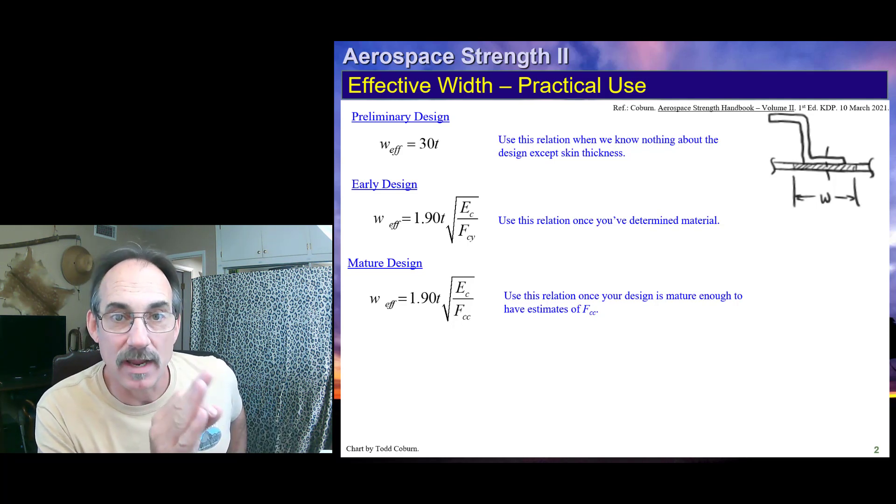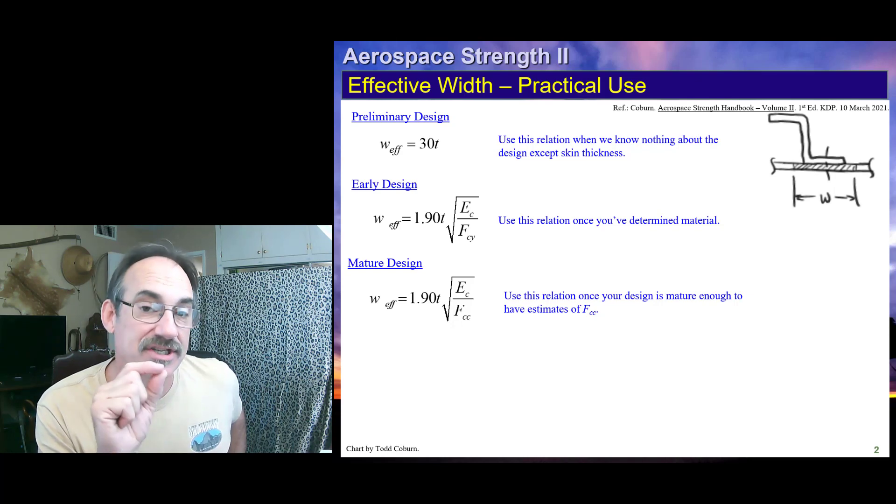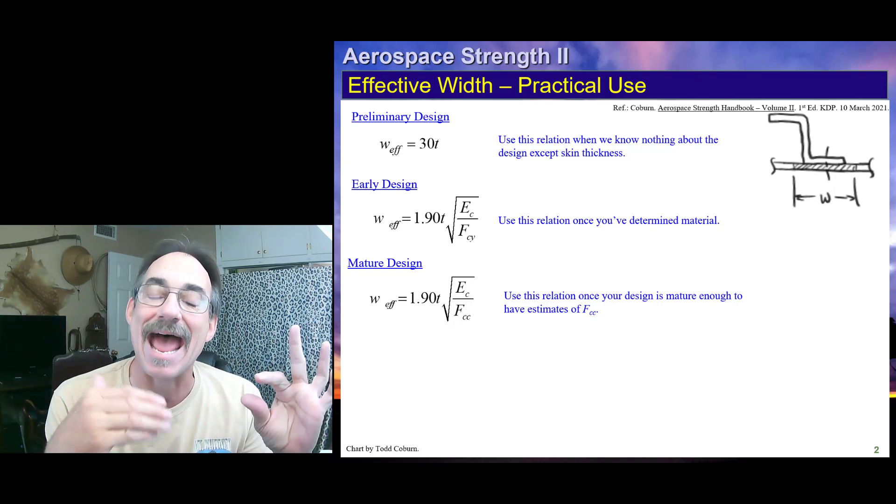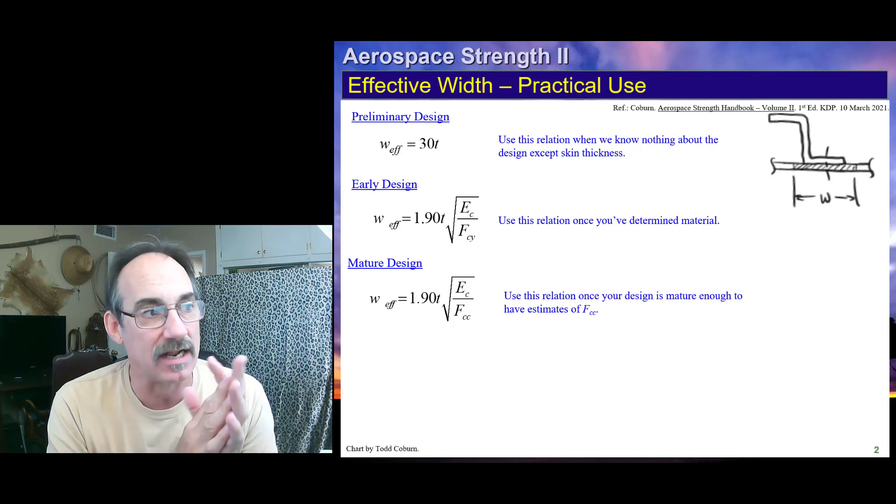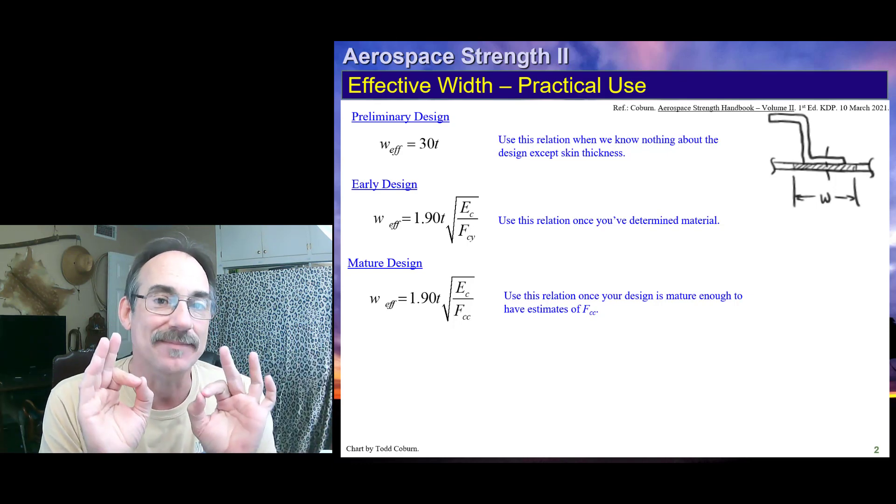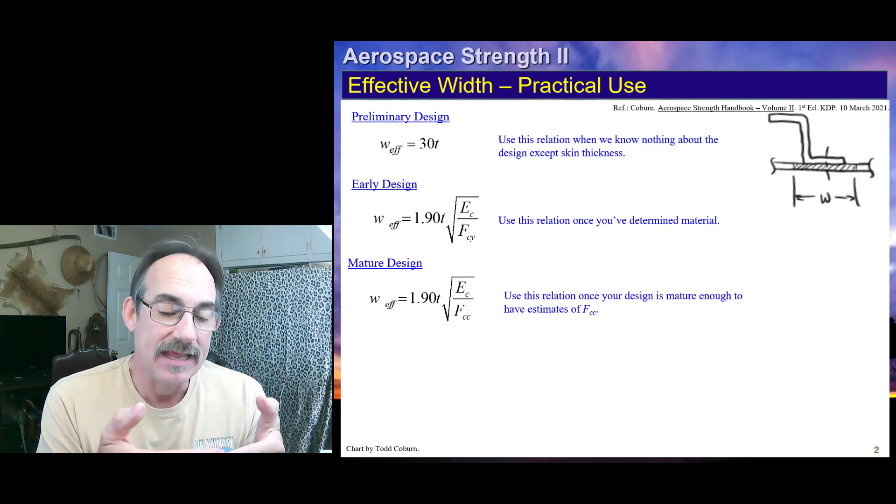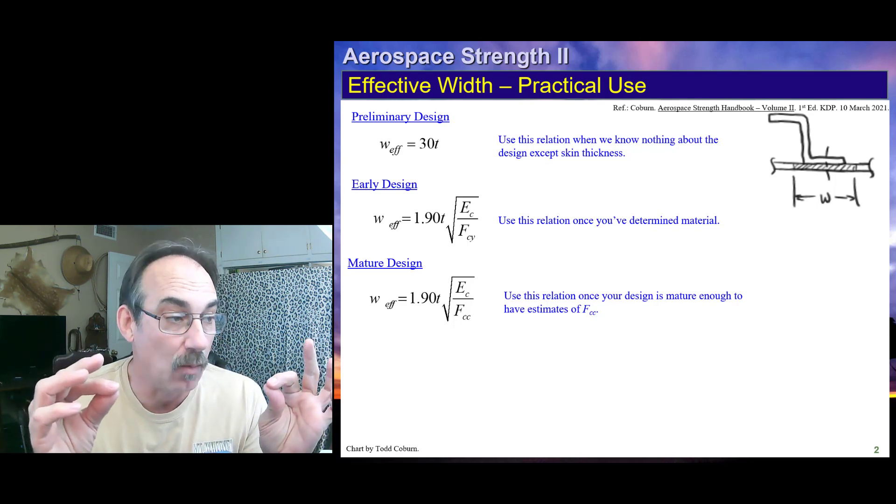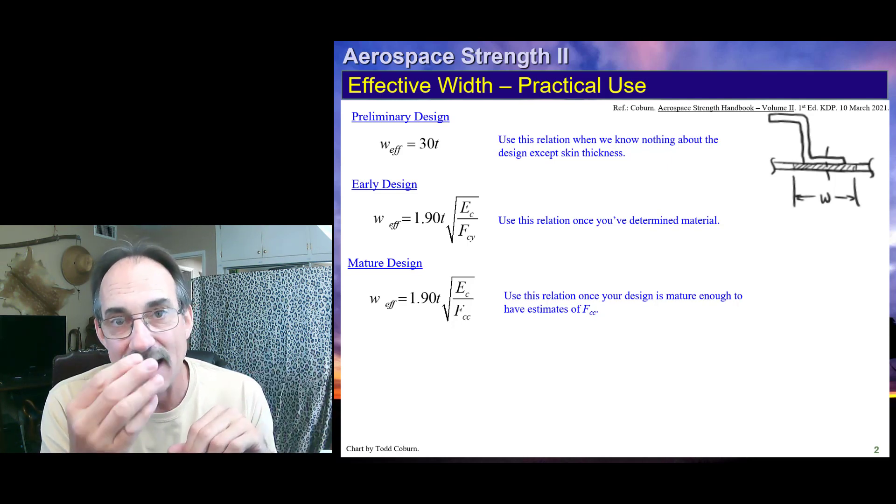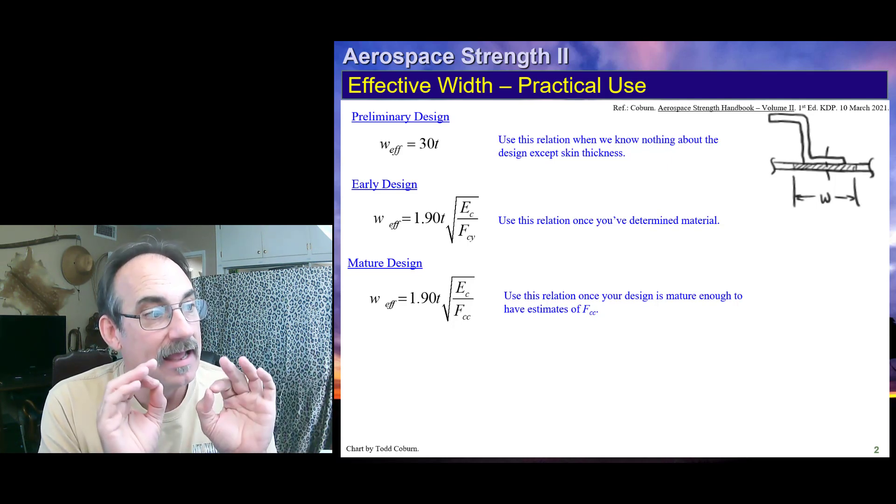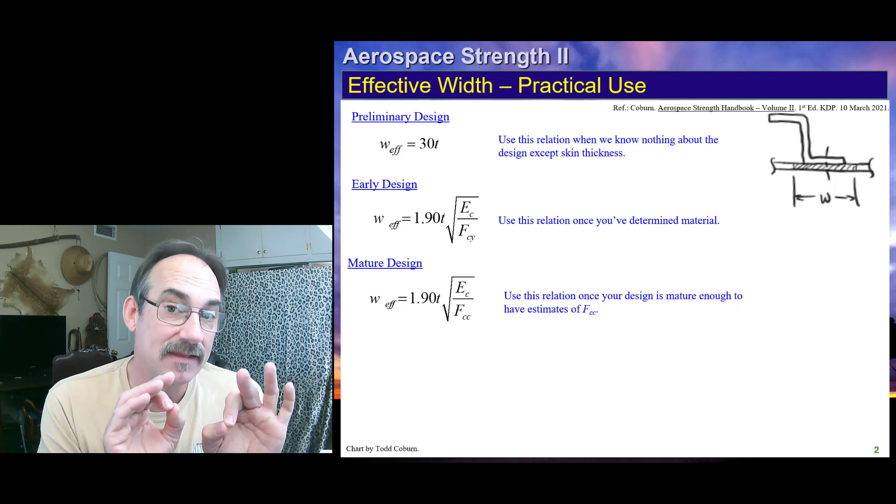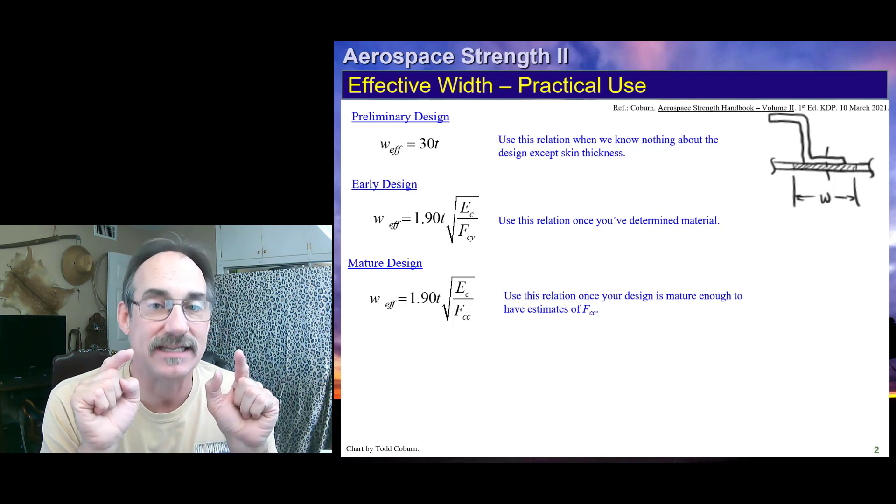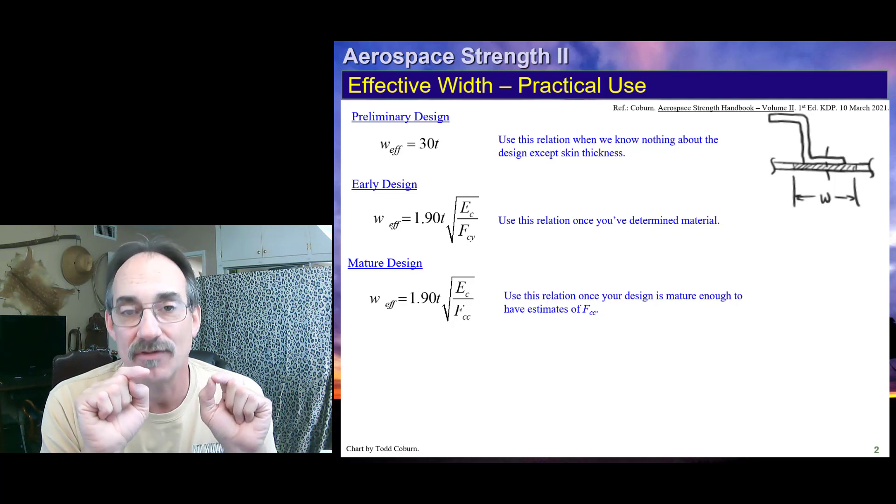Now, remember in these equations, in all of these equations, T is the thickness of the skin or thin web that you're trying to add to the stringer or the other cross-section. E_C is also the compressive modulus of the skin or thin web that we're trying to add to our cross-section. F_CY and F_CC are actually for the stringer itself, not for the skin. They're for the stringer.